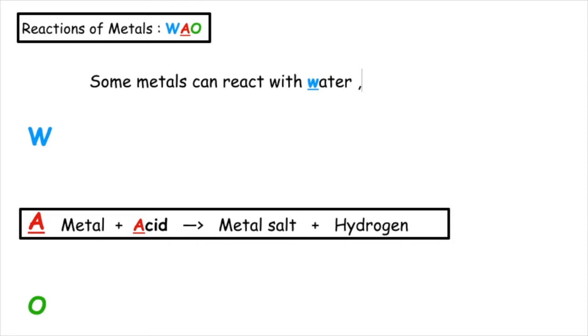Some metals can react with water, acid, or oxygen. The word equation for a metal reacting with acids is: metal plus acid produces a metal salt plus hydrogen gas.